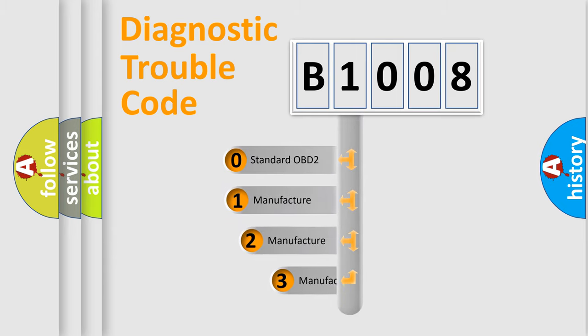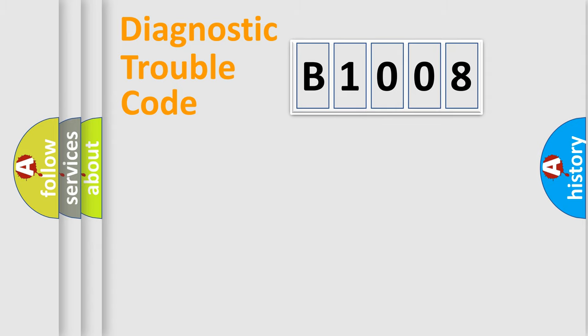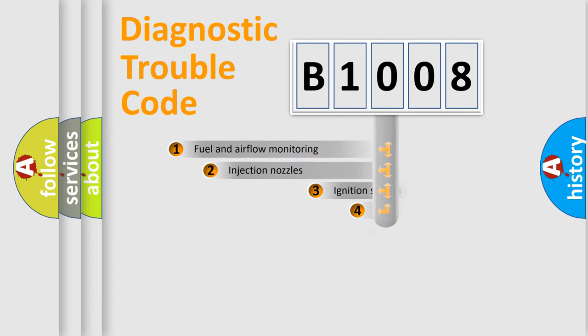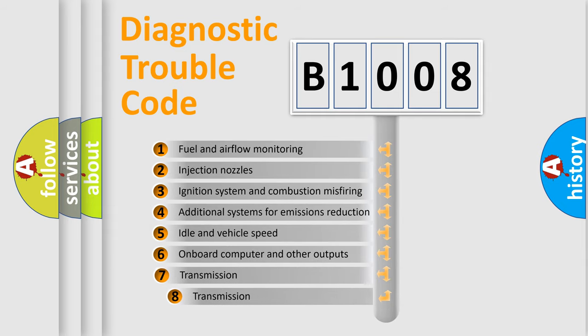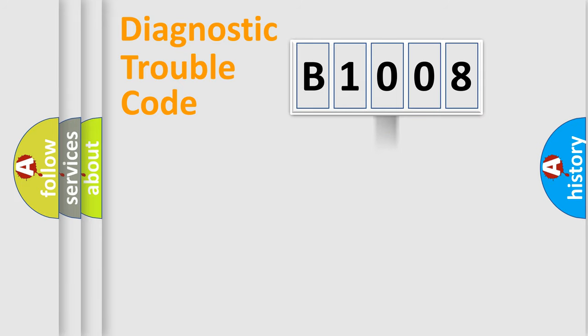If the second character is expressed as zero, it is a standardized error. In the case of numbers one, two, or three, it is a more specific expression of the car-specific error. The third character specifies a subset of errors. The distribution shown is valid only for the standardized DTC code.